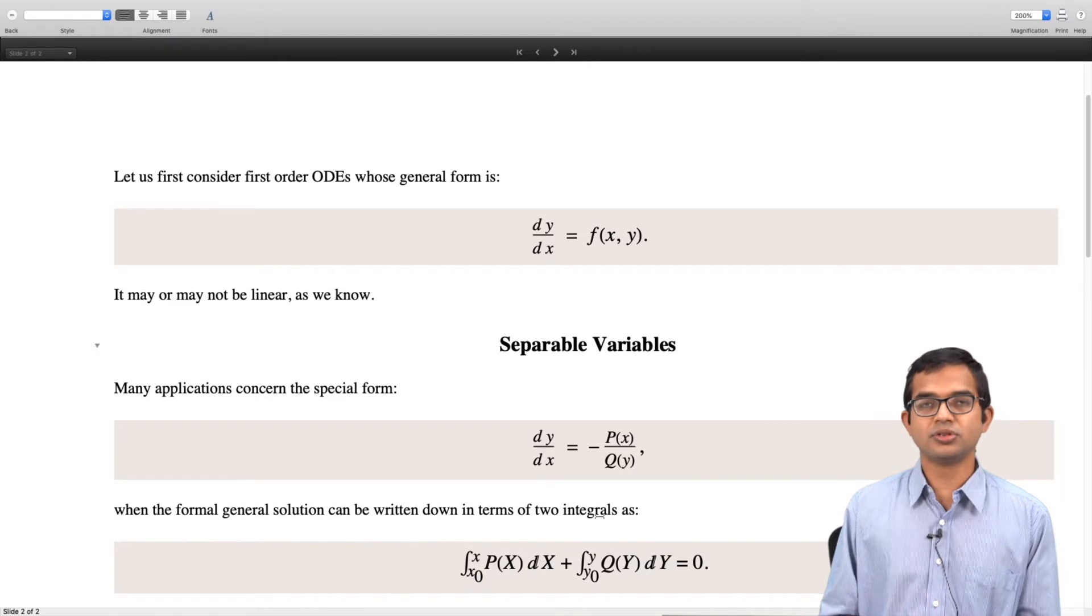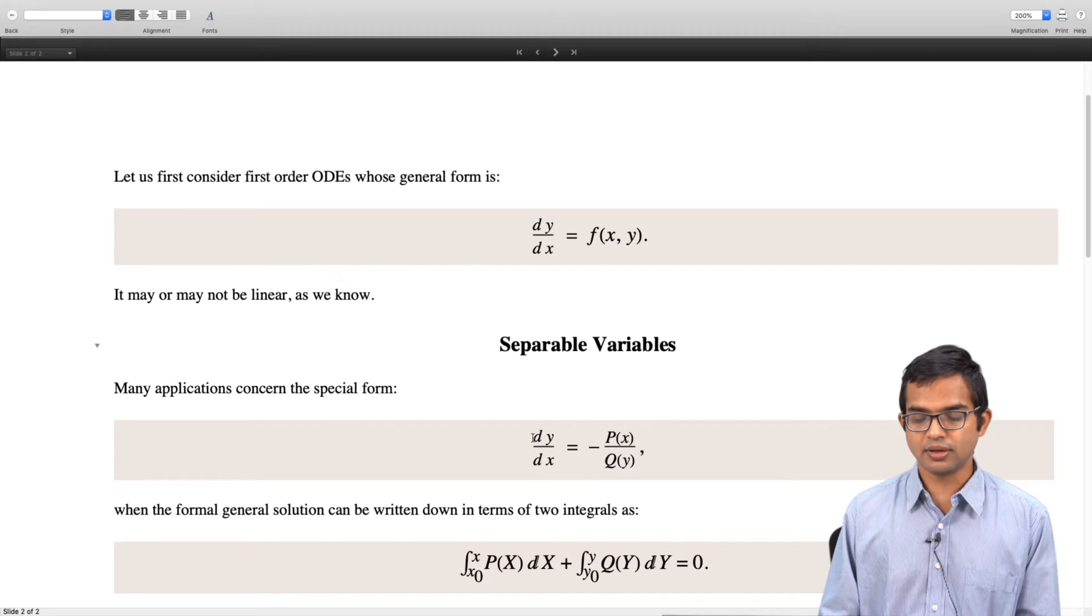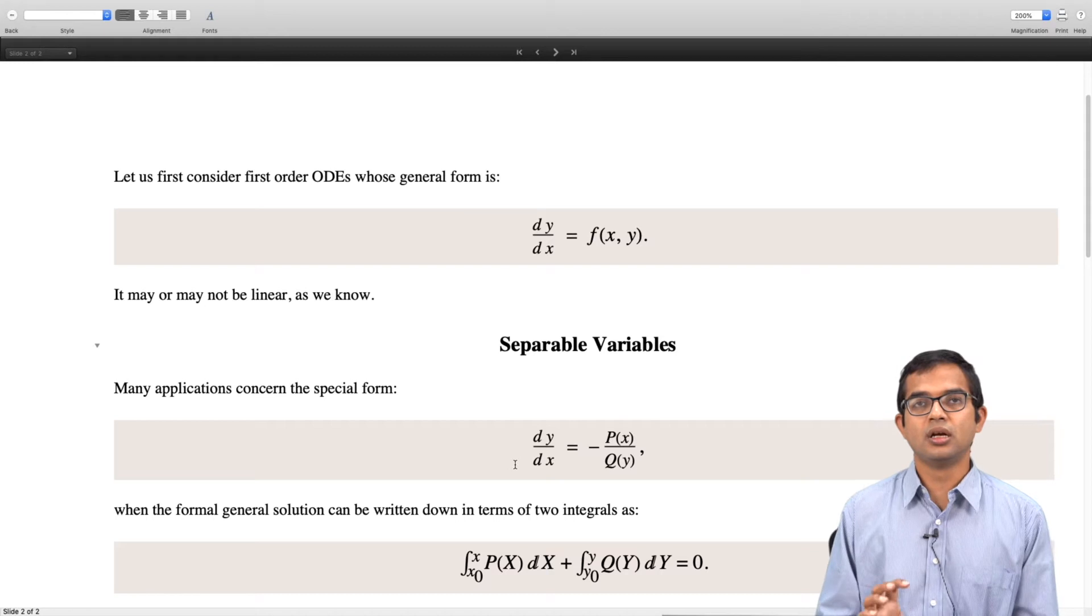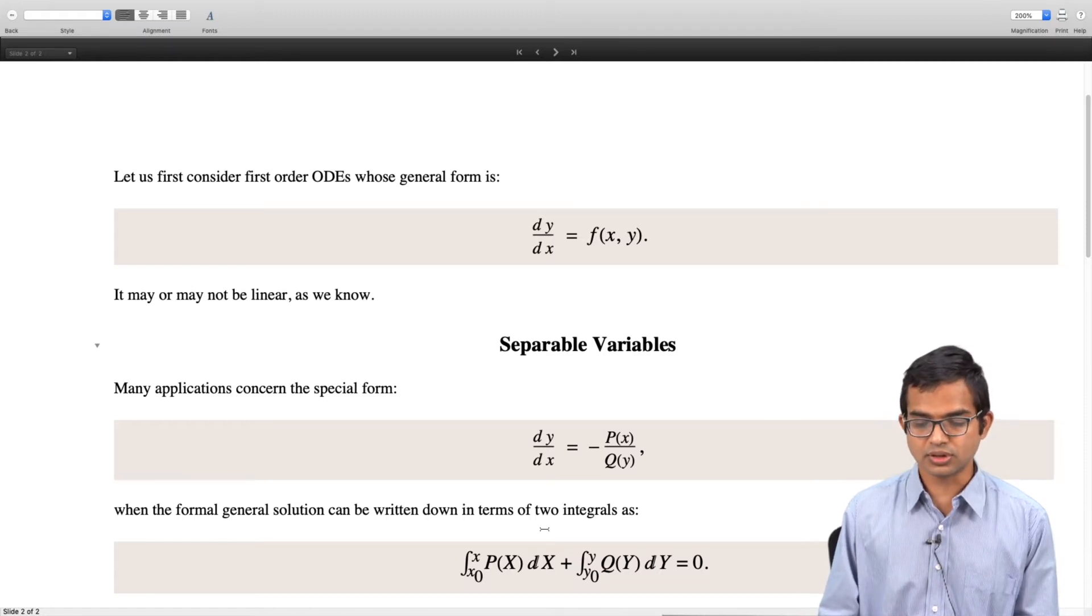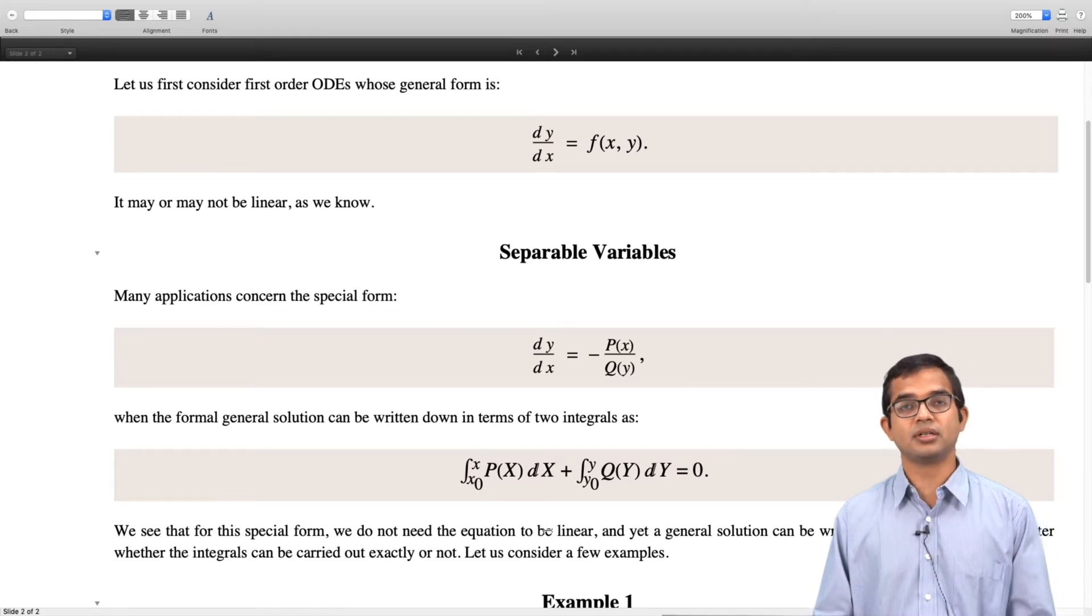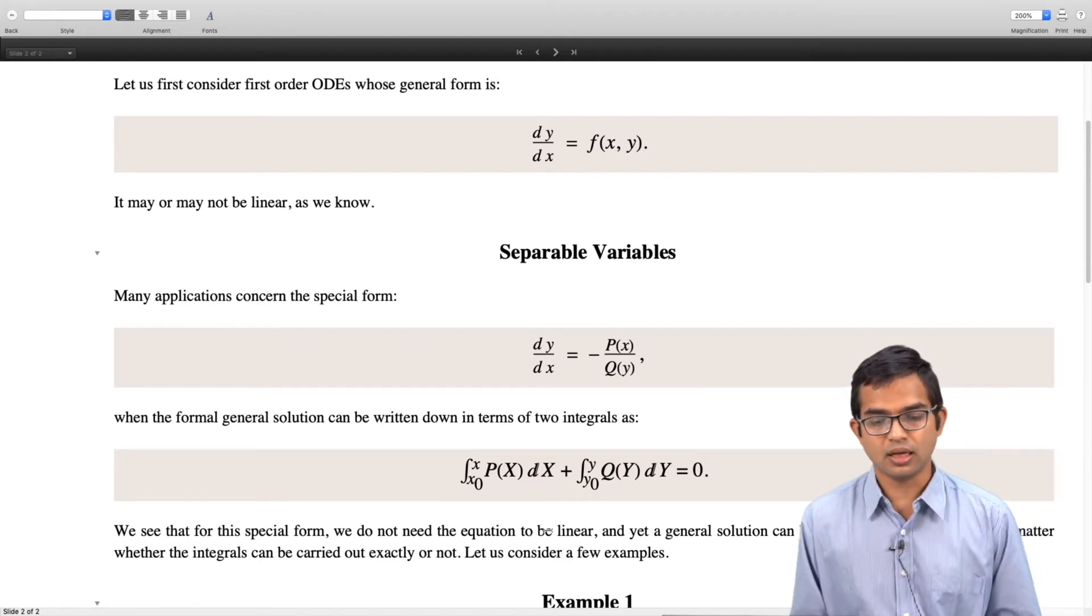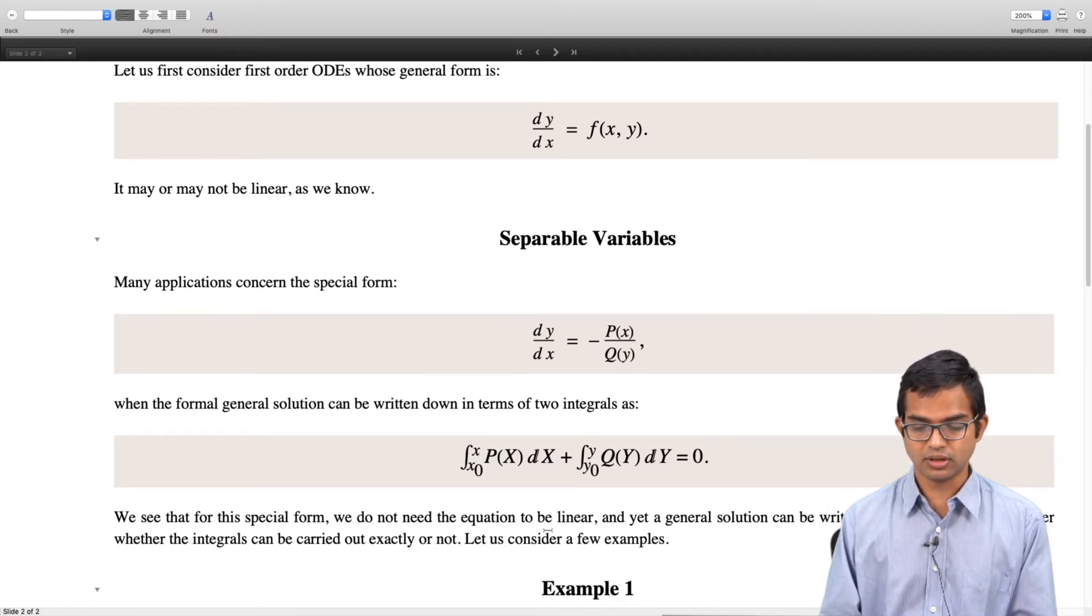Then the formal solution can be written down. You bring Q(y)dy to the left side, then you can write P(x)dx and integrate both of them. Since it is a function purely in x and another function purely in y, you can formally integrate both of these and that is the solution. It is another matter whether this integration can be carried out in closed form or not, but if it is a separable differential equation then at least there is a formal solution available. Let us look at a few examples.